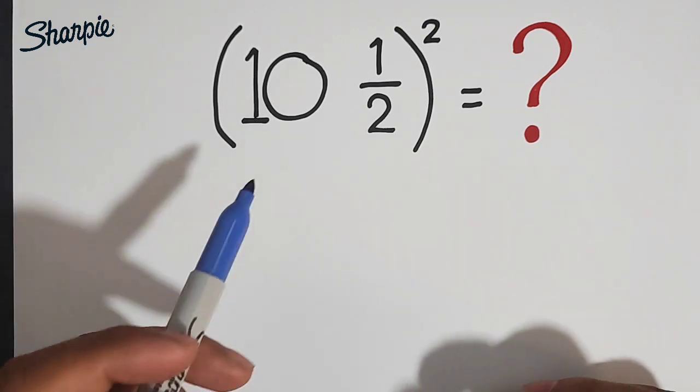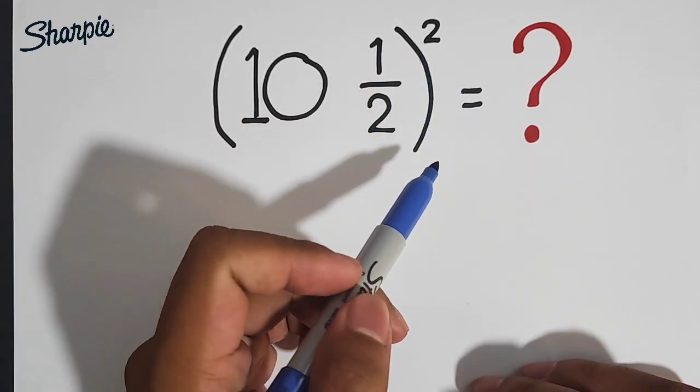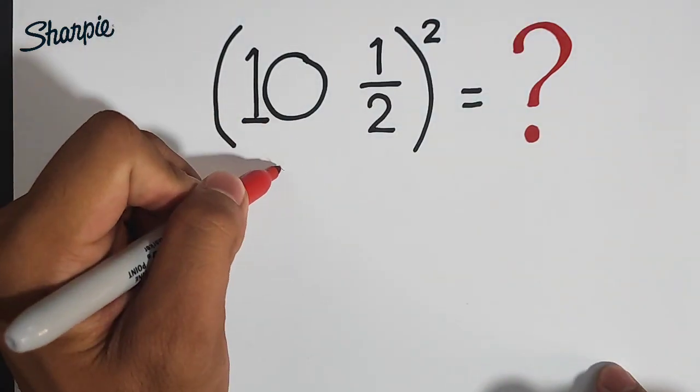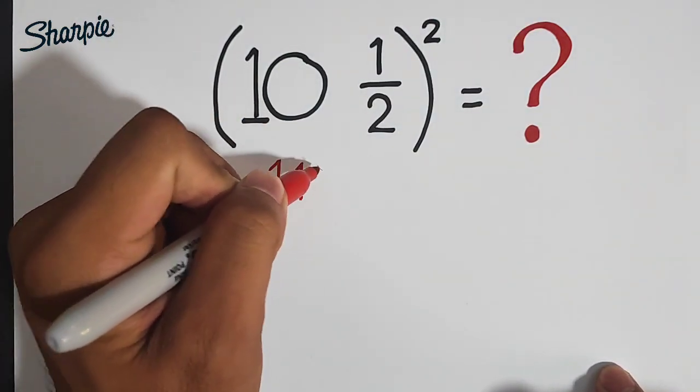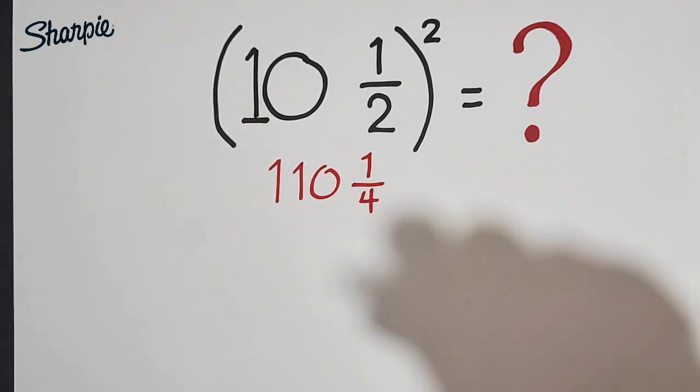If you want to simplify this kind of mixed number raised by a power of 2, this one is equivalent to 110 and 1 over 4. Again, the answer is 110 and 1 over 4.